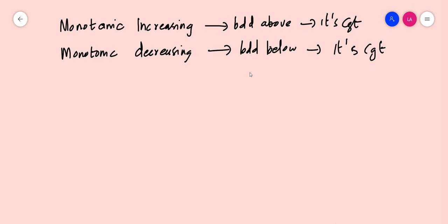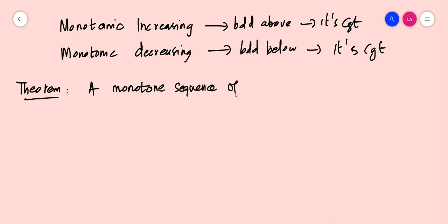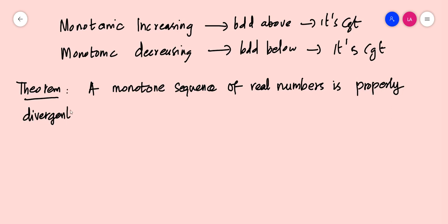This intuition can be properly stated as a theorem, and it gives another criterion to establish whether or not a sequence is properly divergent. So we can state that as a theorem: a monotonic sequence of real numbers is properly divergent if and only if it is unbounded.